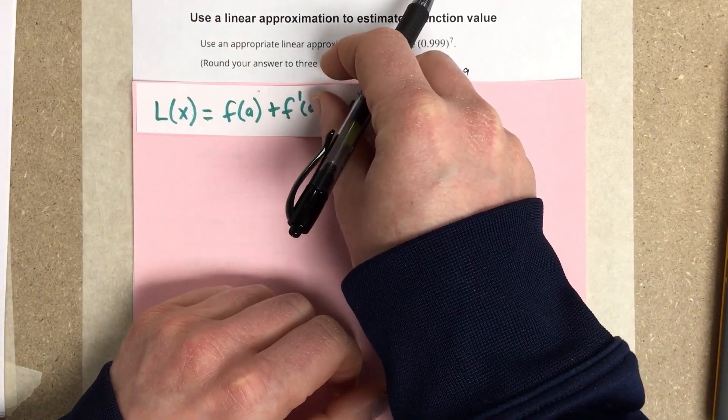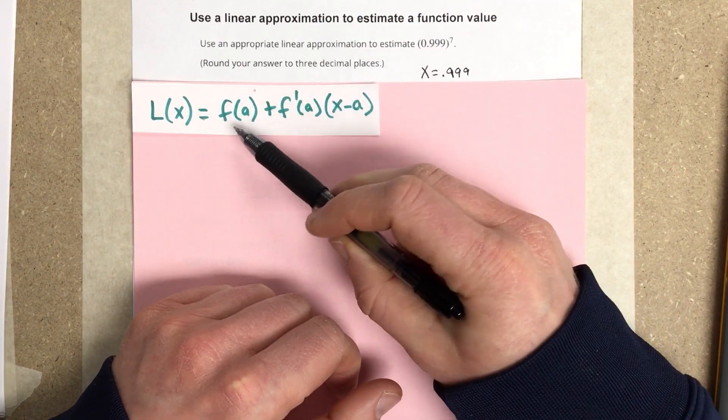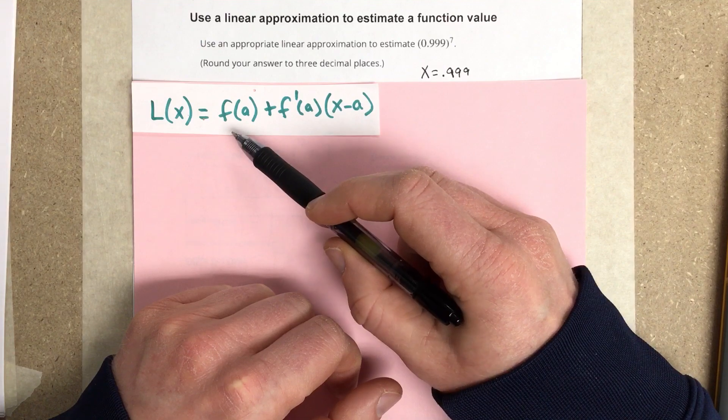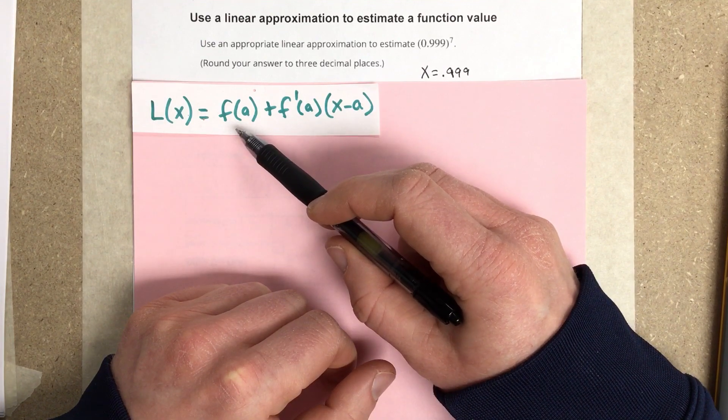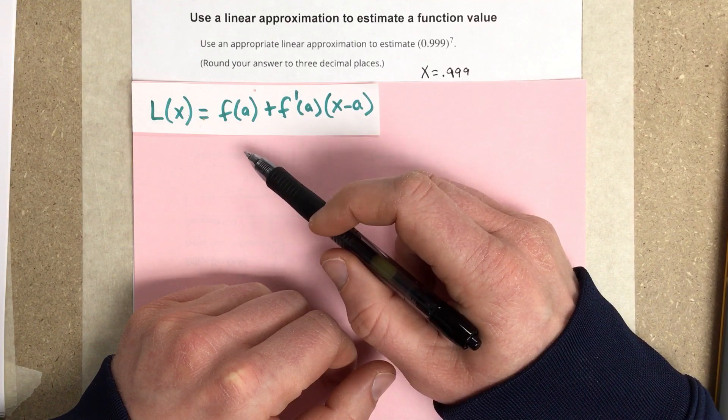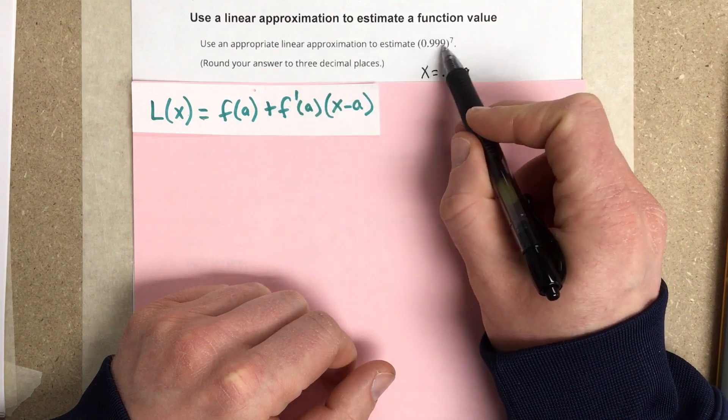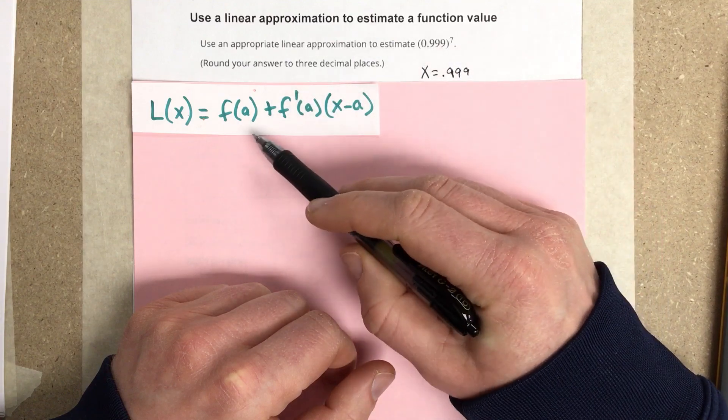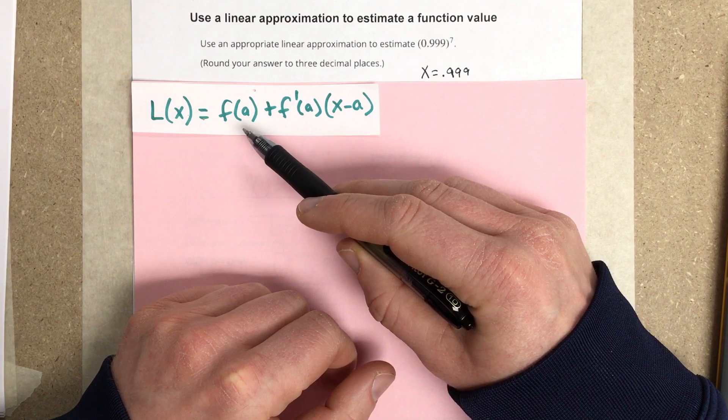So let's talk about the formula for a linear approximation. The formula for the linear approximation is basically a tangent line at your specific point. And as long as the a value that we choose is close to 0.999, then the tangent line gives us a good estimation of the value of that point.